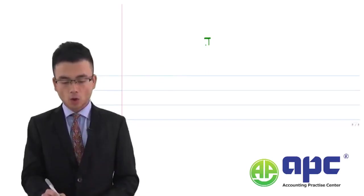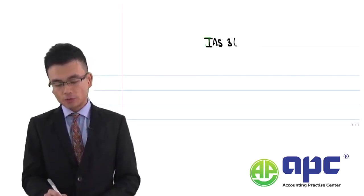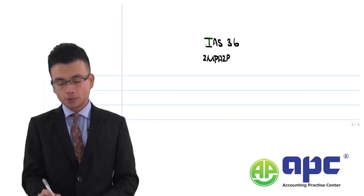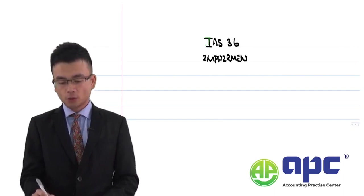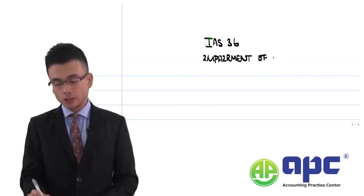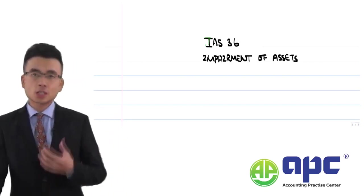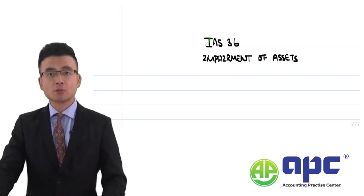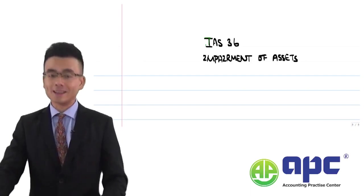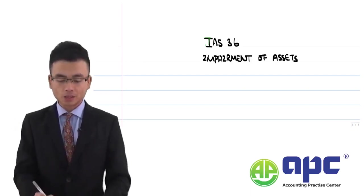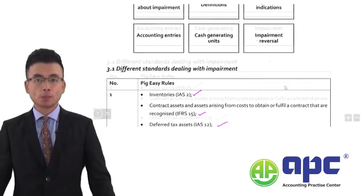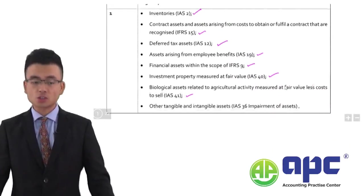Welcome to International Accounting Standard No. 36, Impairment of Assets. We've talked about lots of asset impairments in the previous sections. For example, we've talked about inventory impairments, and those shouldn't be accounted for under IAS 36, because inventory impairment should be accounted for under IAS 2 Inventories. So IAS 36 may not be suitable to certain circumstances.